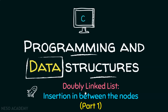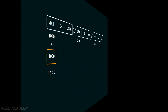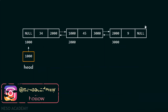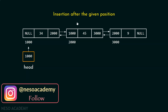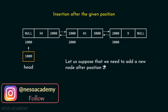In this presentation, we will learn how to insert a node in between the other nodes. Let us suppose this is the initial state of the linked list, and our target is to insert a node after the given position. Let us suppose that we need to add a new node after position two.